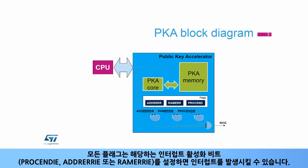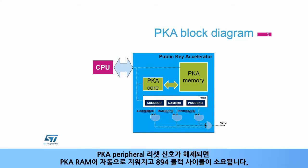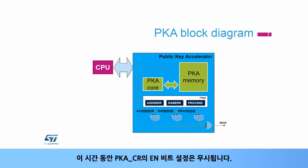All flags can generate an interrupt if the corresponding interrupt enable bit is set: PROCENDIE, ADDRERRIE, or RAMERRIE. When the PKA peripheral reset signal is released, the PKA RAM is cleared automatically, taking 894 clock cycles. During this time, the setting of the EN bit in PKA CR is ignored.